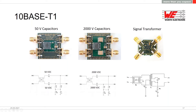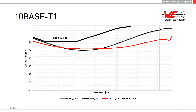On the right-hand side we have a signal transformer. Single-pair Ethernet and standard LAN signals are not so different, so our thought was that a transformer could work from a performance standpoint. What many people don't know is that a transformer also has good properties for reducing common mode signals — it leads common mode signals to ground. Therefore, with the transformer we don't even need a common mode choke inside this circuit. So for 10BaseT1, no common mode choke is needed.